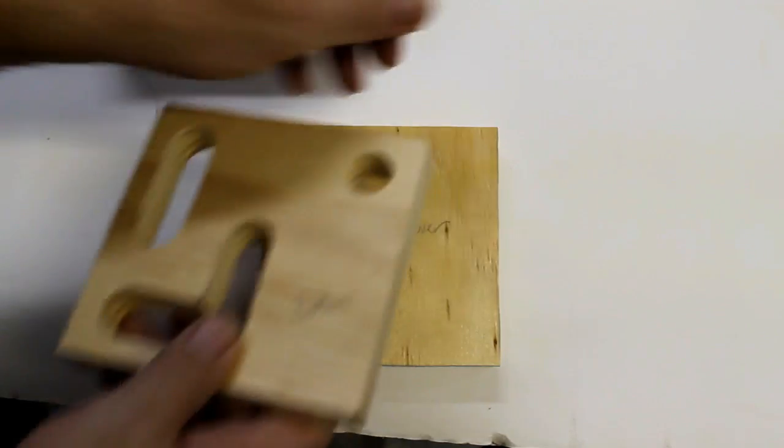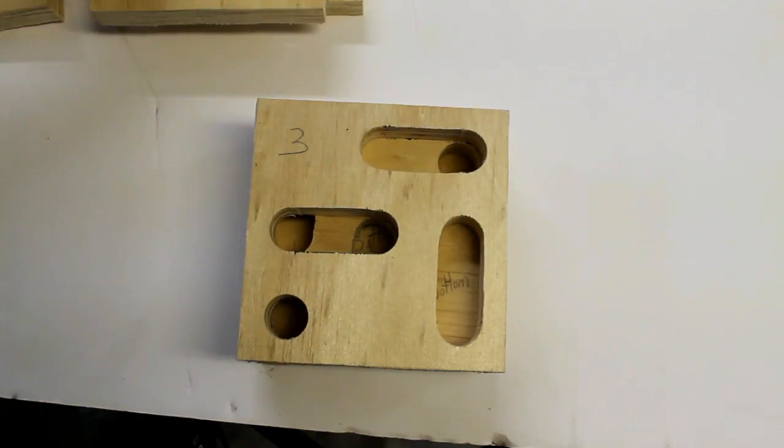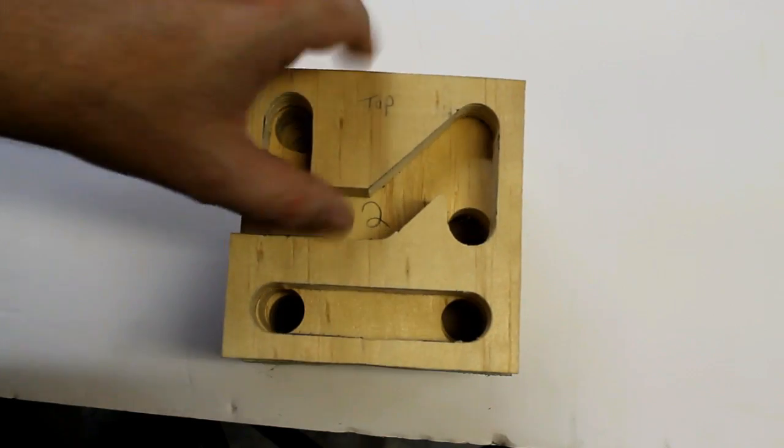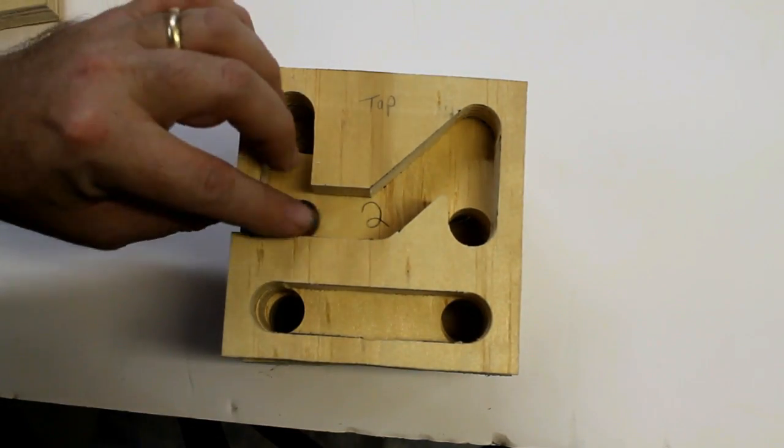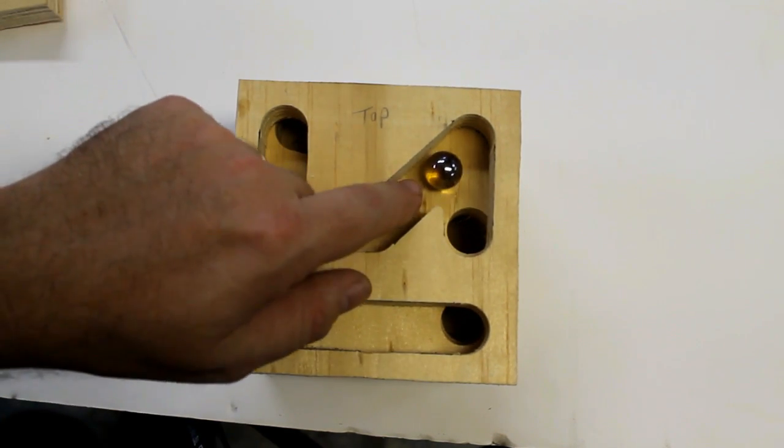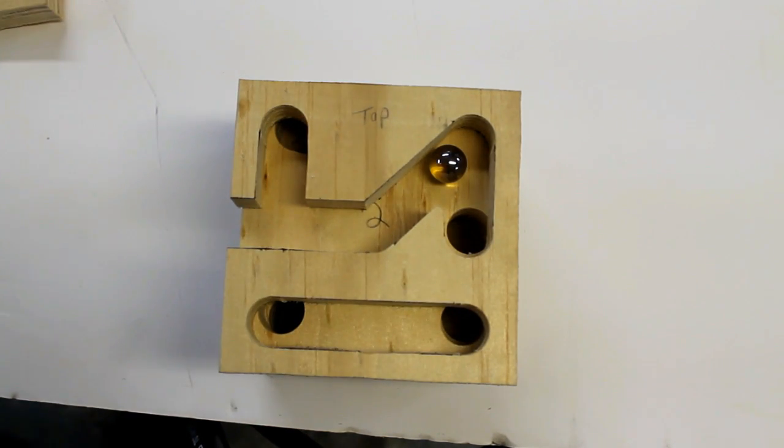So you would have to backtrack to get out of there. The correct way to enter the maze could be straight ahead, so the ball comes around, goes down, and it can fall through that hole there. Now that hole...